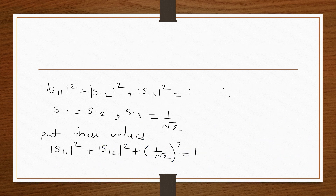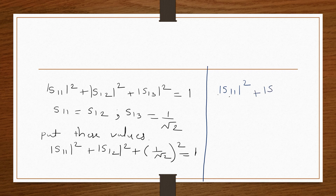Now solving all equations simultaneously: S11² + S12² + S13² = 1. Since S11 = S12 and S13 = 1/√2, we substitute: S11² + S11² + (1/√2)² = 1, giving 2S11² + 1/2 = 1, so 2S11² = 1/2, meaning S11 = 1/2.